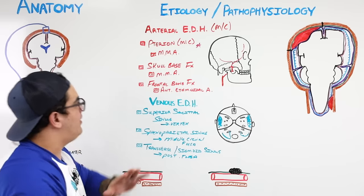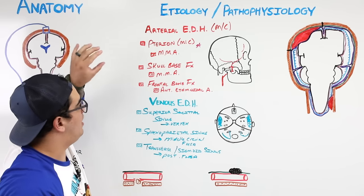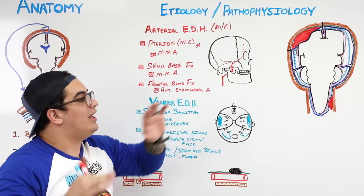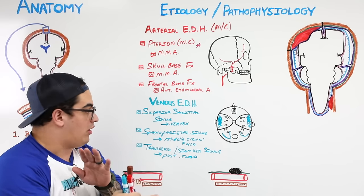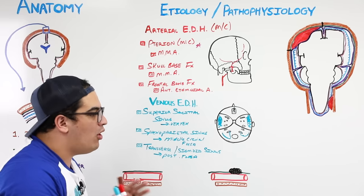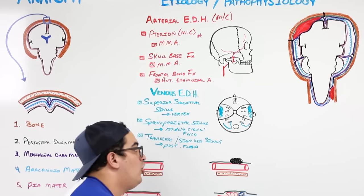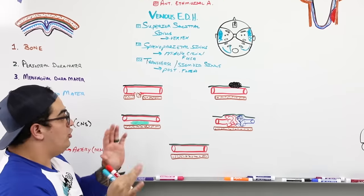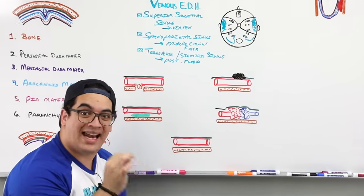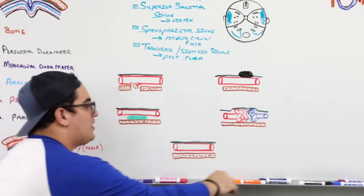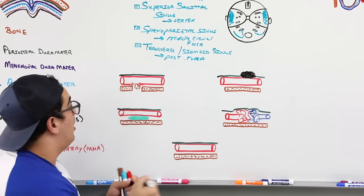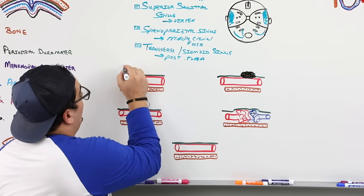To recap: the most common scenario is a thin piece of bone at the pterion, where the two sutures join, causing laceration of the middle meningeal artery. By far the most common cause of an epidural hematoma — when arterial — is trauma: either some type of penetrating trauma or blunt force trauma.